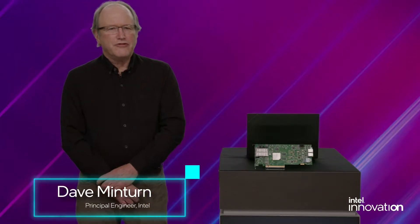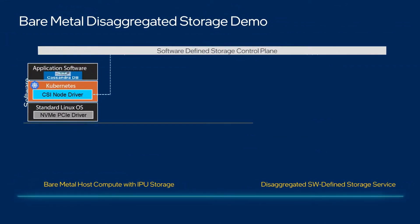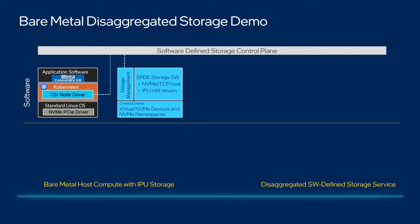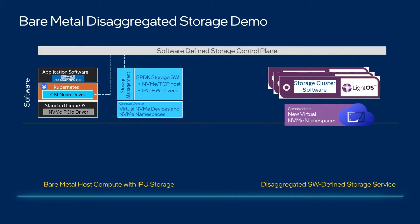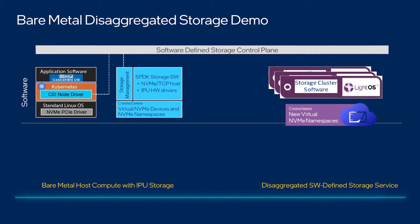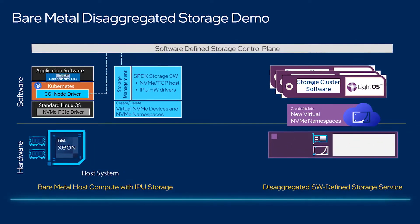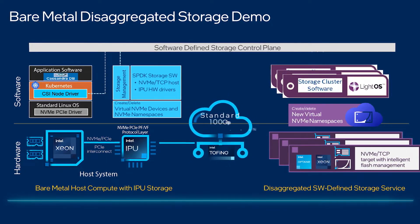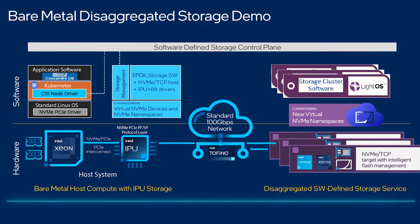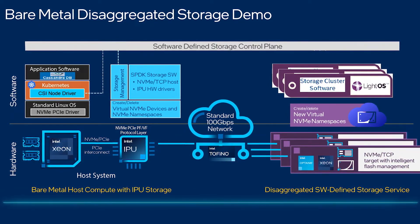Thank you, Anthony. This demo will show the use of the Intel IPU and LiteBit disaggregated storage with the LiteBit Kubernetes CSI plugin to create Kubernetes persistent volumes used by a host containerized Cassandra application. The demo configuration consists of an Intel Xeon Scalable Processor-based host system with an Intel Mount Evans IPU, paired with a LiteBit OS NVMe TCP storage cluster over a standard 100 gigabit Ethernet network via an Intel Tofino-based switch.